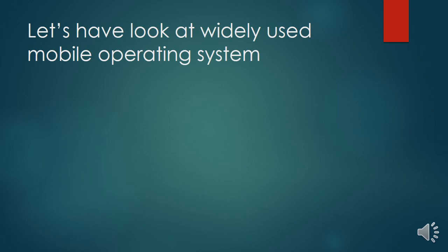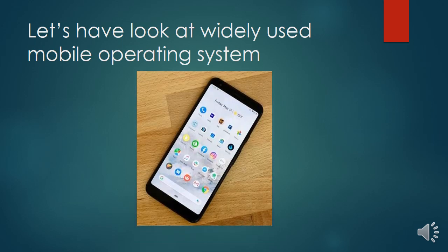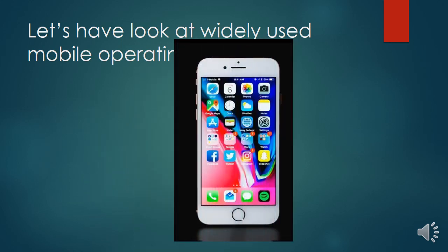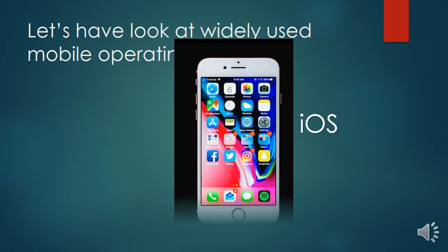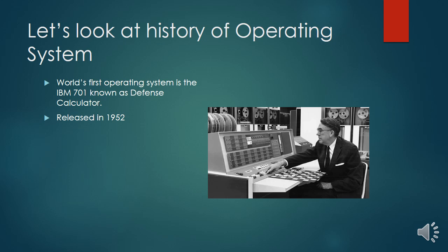Some widely used operating systems found in phones include Android and iOS, most commonly found on iPhone devices. The very first operating system was the IBM 701, also known as the Defense Calculator, released in 1952 in the US for defense purposes.